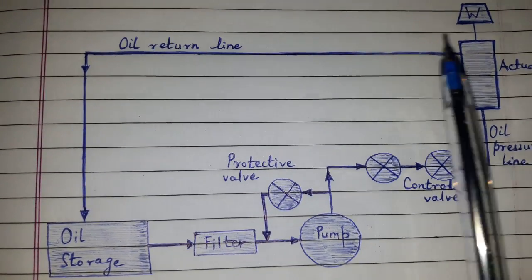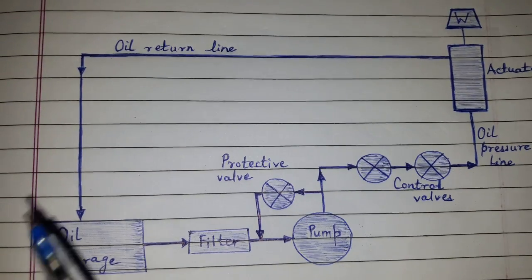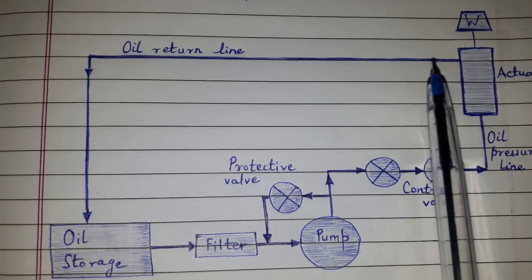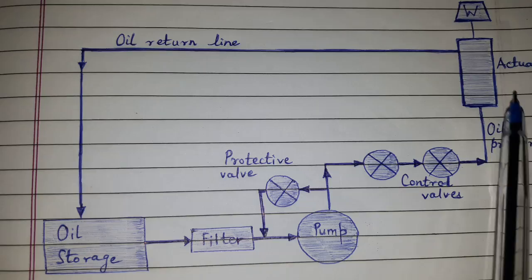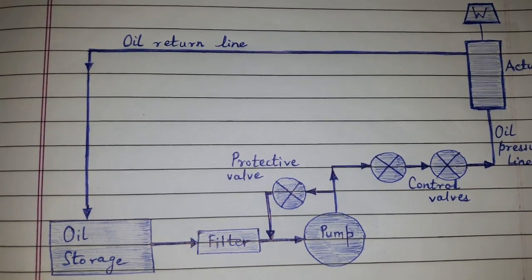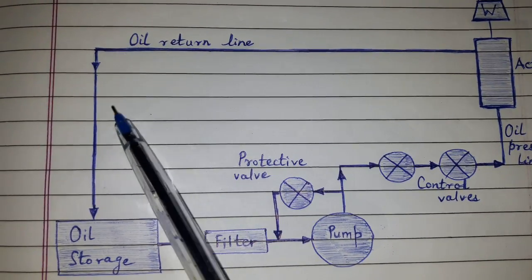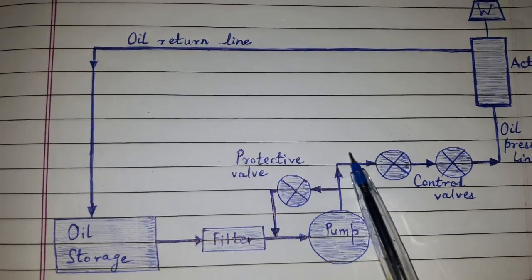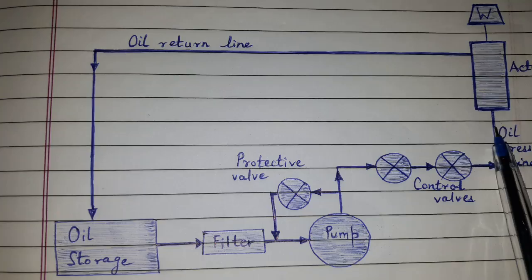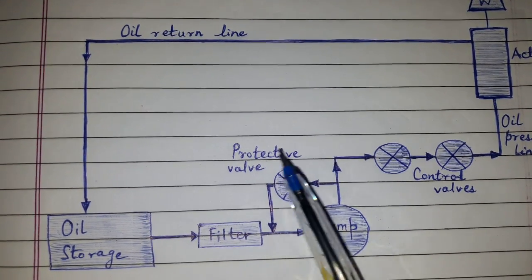Next is the actuator, which may be reciprocating or rotary. Reciprocating is the linear actuator, and rotary may be hydraulic motors. Then the fluid or oil conducting elements such as pipeline or connector hoses, and the medium, that is hydraulic oil.